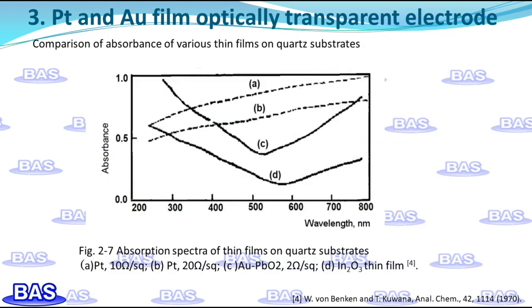For gold films on bismuth or lead oxide substrates shown in Figure 2-6, both impedance and absorbance decrease with annealing time. Figure 2-7 shows the absorption spectra of various films. The absorbance of platinum film in the wavelength range of 250 to 800 nm is approximately linear, while the absorption spectrum of gold film has a minimum at approximately 550 to 650 nm. When these metal films are deposited on a quartz substrate, the resulting optically transparent electrode can be used in ultraviolet region studies. The electrochemical properties of the gold thin film electrode are very similar to the bulk electrode.